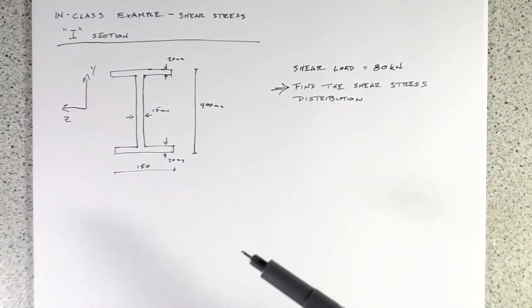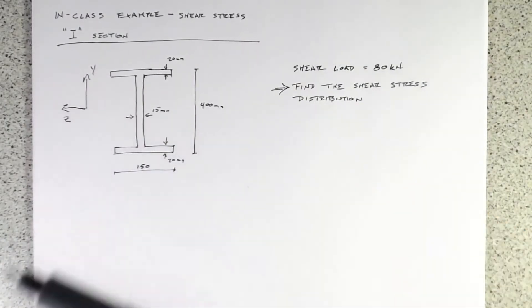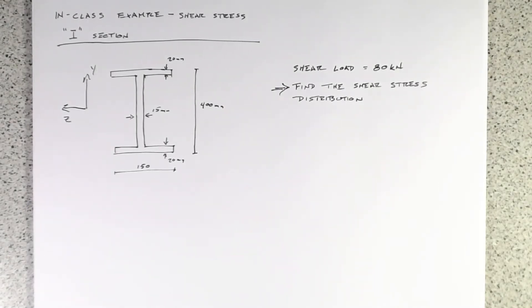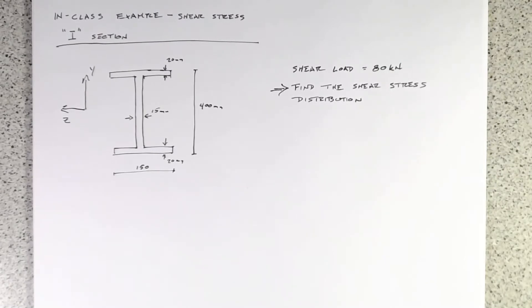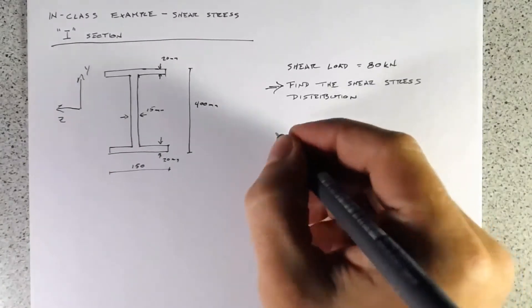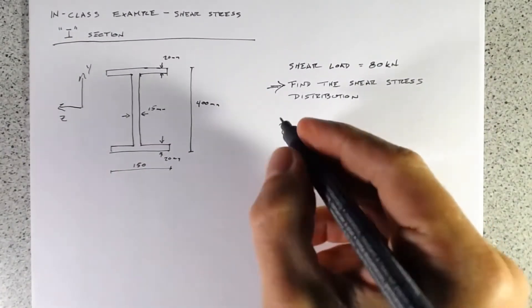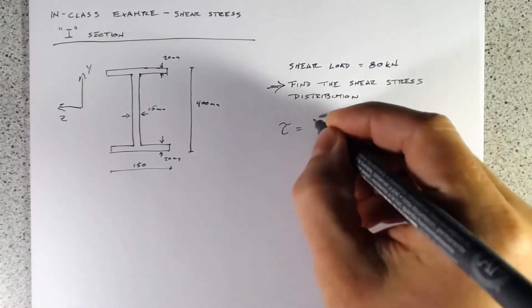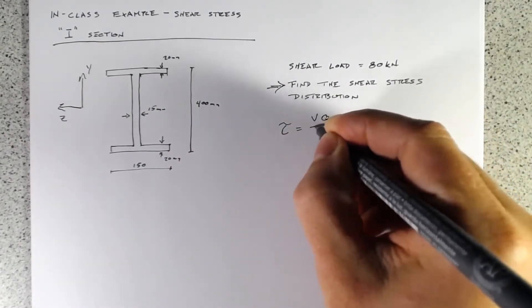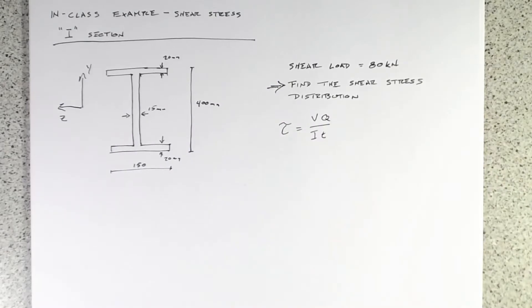The x coordinate will be coming in and out of the plane. For shear stress, the key equation we need is tau equals VQ over IT, where Q equals A1·y1 — the area of the section above a given distance, times the centroidal distance from that area to the centroid of the member. Because we need the centroid of the member, we need to find y-bar and the moment of inertia I.